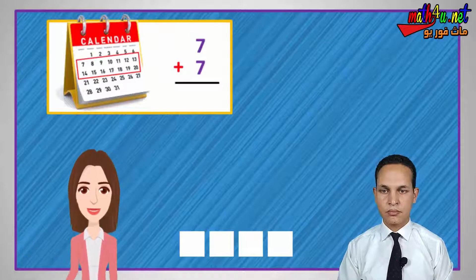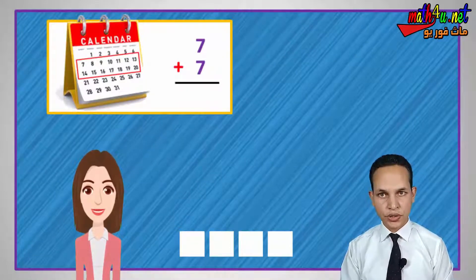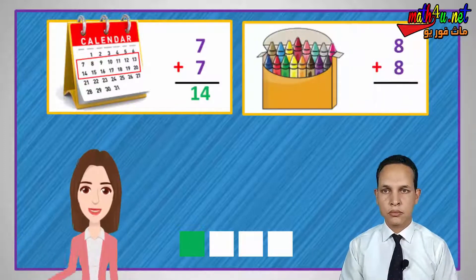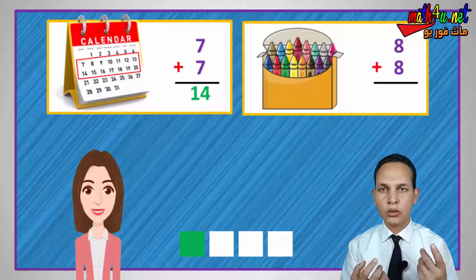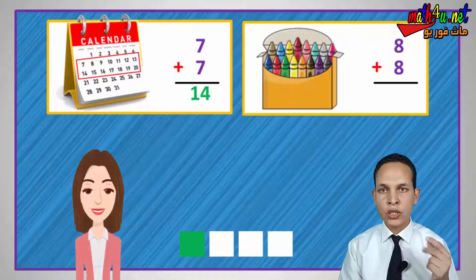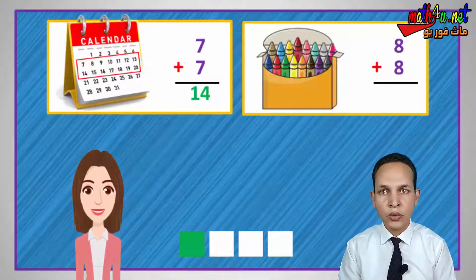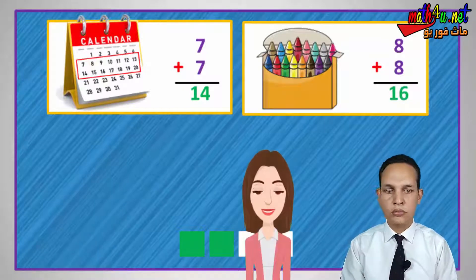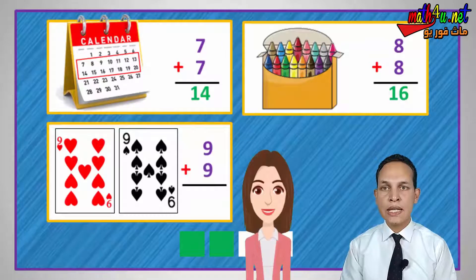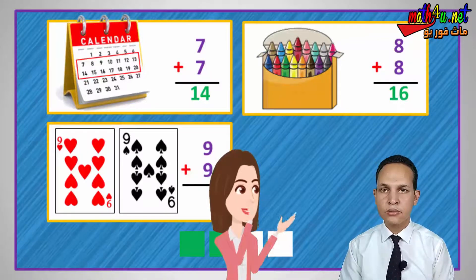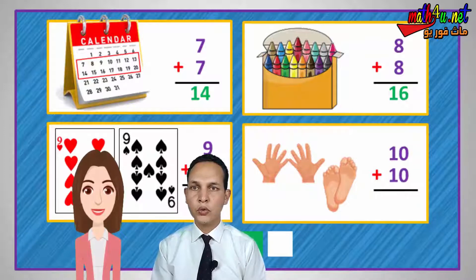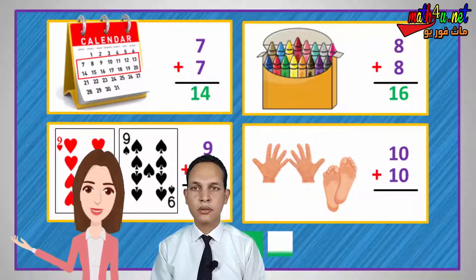Seven days plus seven days equals fourteen — excellent! Seven days plus seven days equals fourteen days. Eight crayons plus eight crayons equals sixteen — eight plus eight equals sixteen. Excellent! Nine plus nine equals eighteen — excellent! Ten fingers plus ten fingers equals twenty — ten plus ten equals twenty. Excellent!